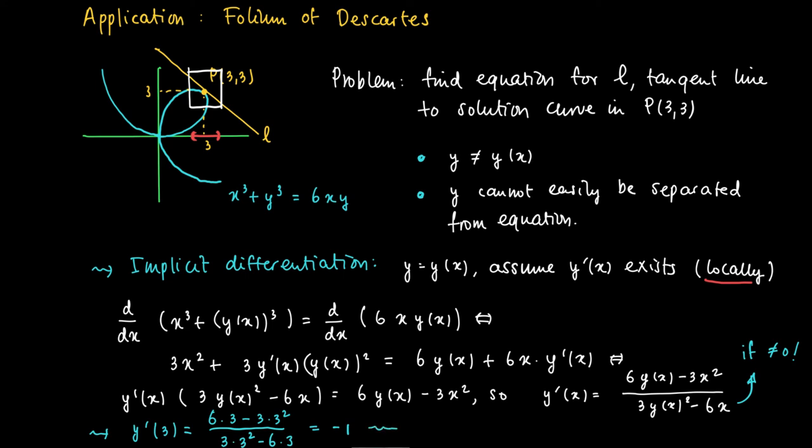So an equation of the tangent line at point (3,3), the line tangent to the curve is the line with equation y equals 3 minus 1, which is the derivative, times x minus 3. So this gives 6 minus x.